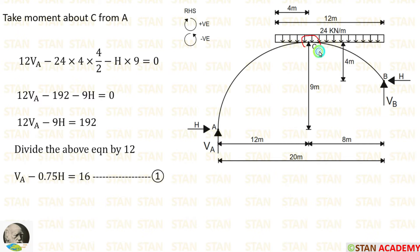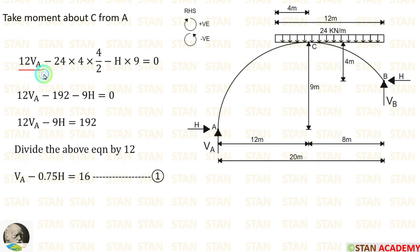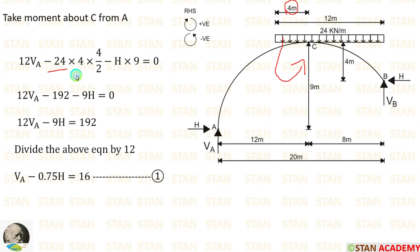I am going to take moment about C from point A. We are taking moment about C because the moment will be zero at C since it is hinged. When we take moment about C, we are moving towards the right-hand side — clockwise will be positive, anticlockwise will be negative. The vertical reaction Va is acting towards point C in the clockwise direction, so it will be positive and the distance is 12 meter: 12Va. The UDL of 24 kN/m is acting anticlockwise, so it will be negative: minus 24 × 4 × 4/2.